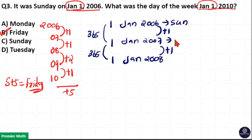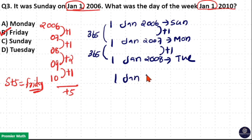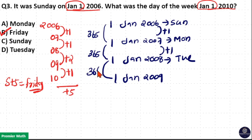So Sunday plus 1 gives you Monday. Again, Monday plus 1 gives you Tuesday. For January 1, 2009: 2008 is a leap year, so the whole 2008 year contains 366 days, plus the 1st day of 2009, counting to 367 days. The difference between these two is 366 days, which contains two odd days, meaning Tuesday plus 2 gives you Thursday.